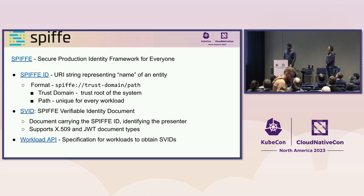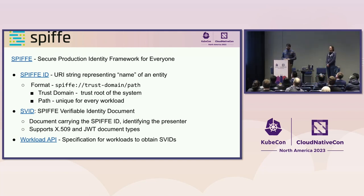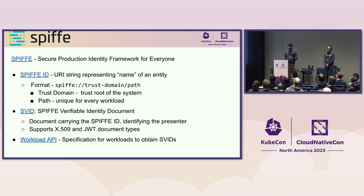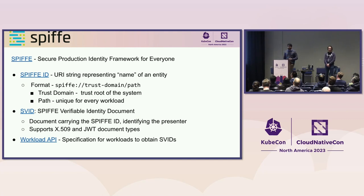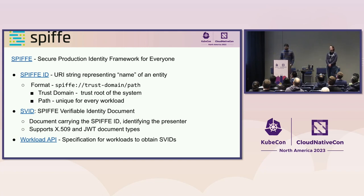Second is the SPIFFE Verifiable Identity Document, also known as SVID. It is a document which proves the identity of a workload. It carries the SPIFFE ID and is used by a workload to identify itself — for example, a workload trying to authenticate to an API on a web server. The current supported document types are X509, which is the format for public key certificates, and JWT, which is a JSON web token. And lastly, we have the workload API, which is a set of API specifications for workloads to be able to securely fetch SVIDs.